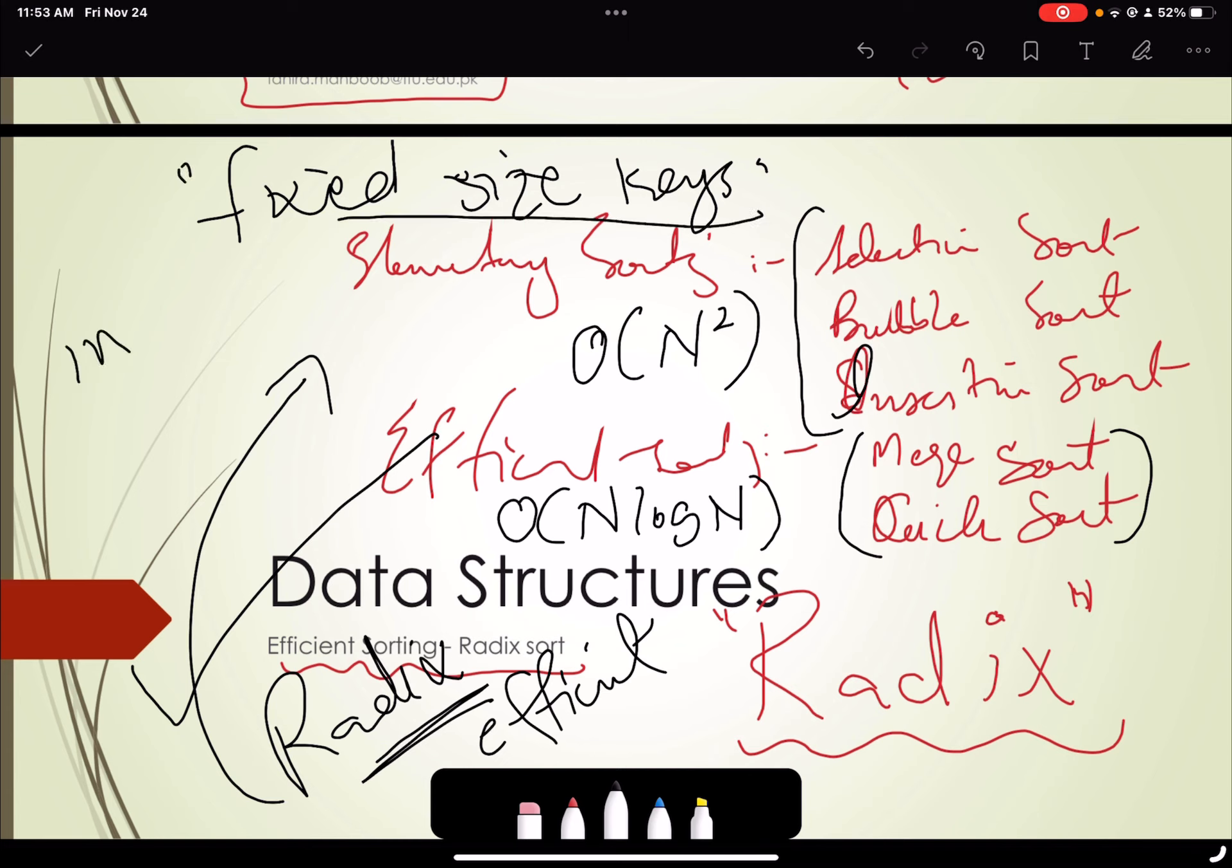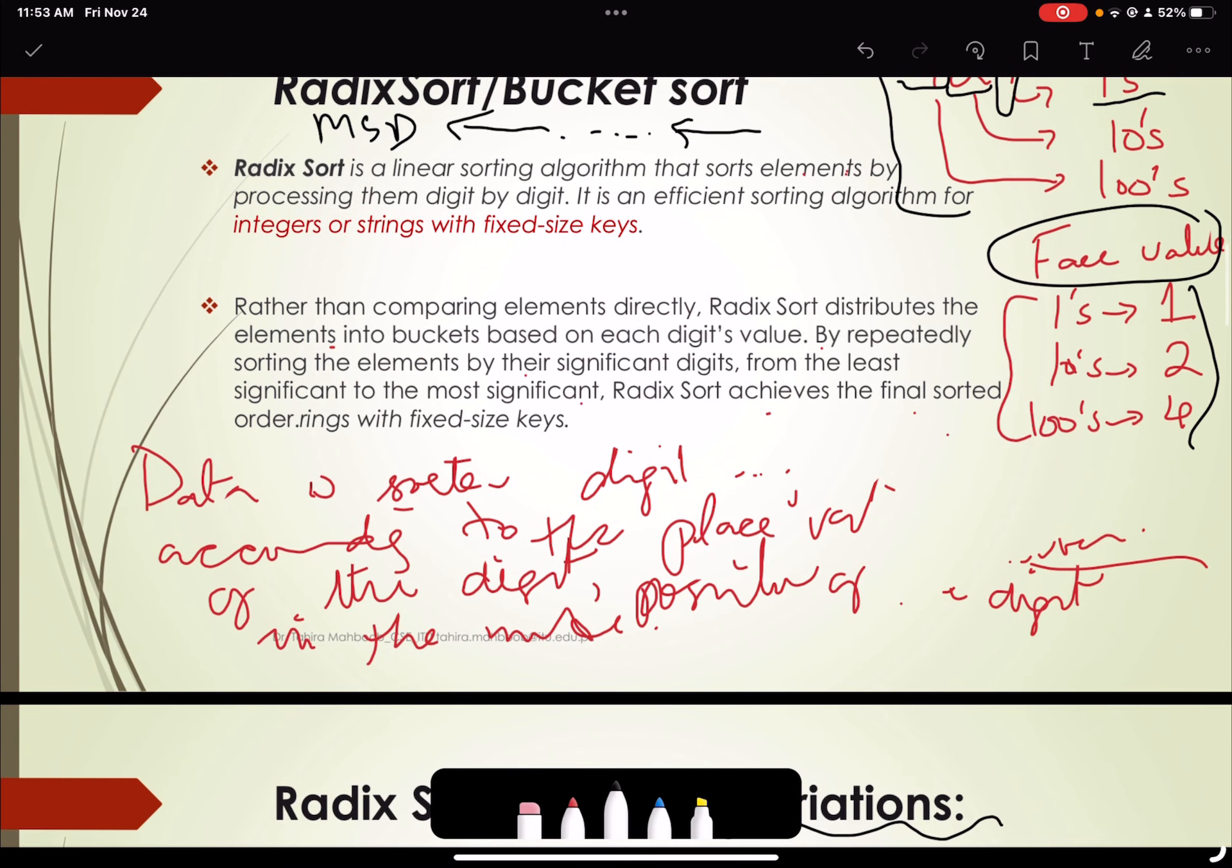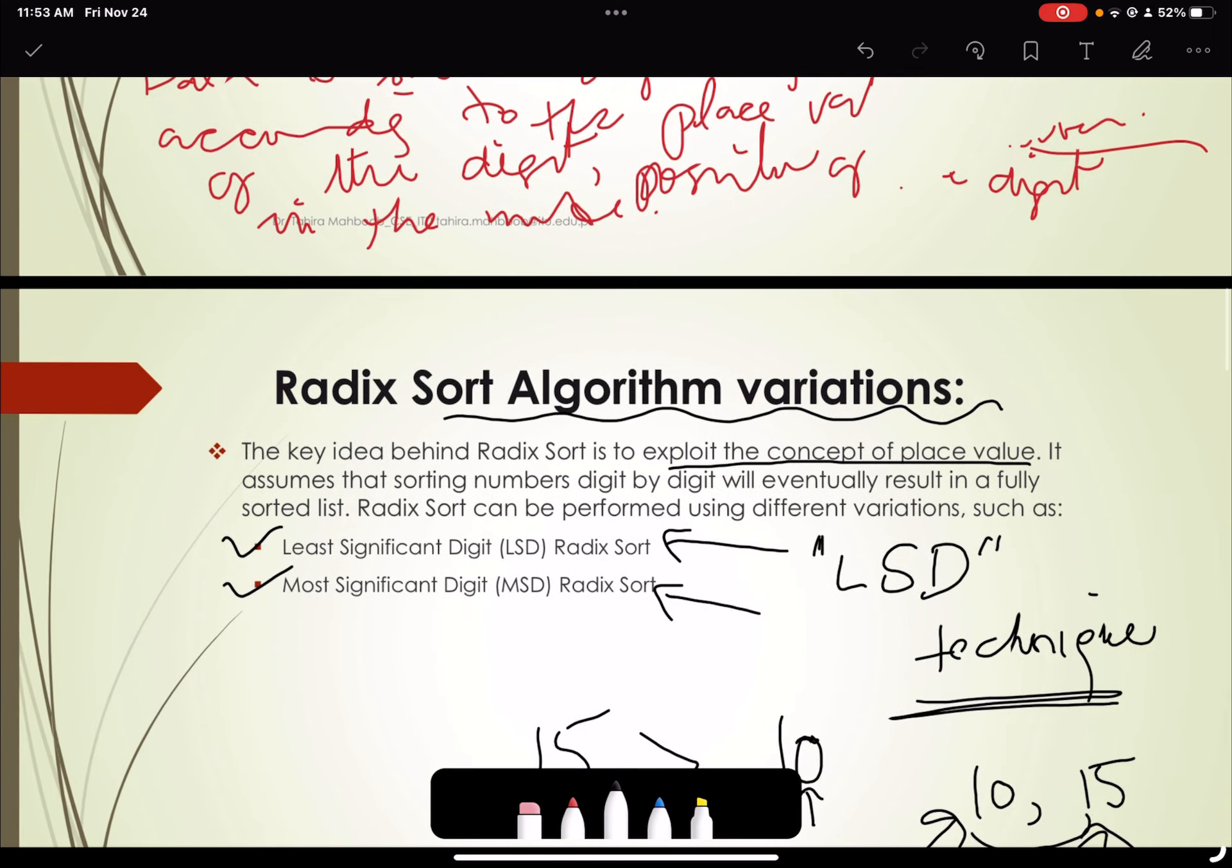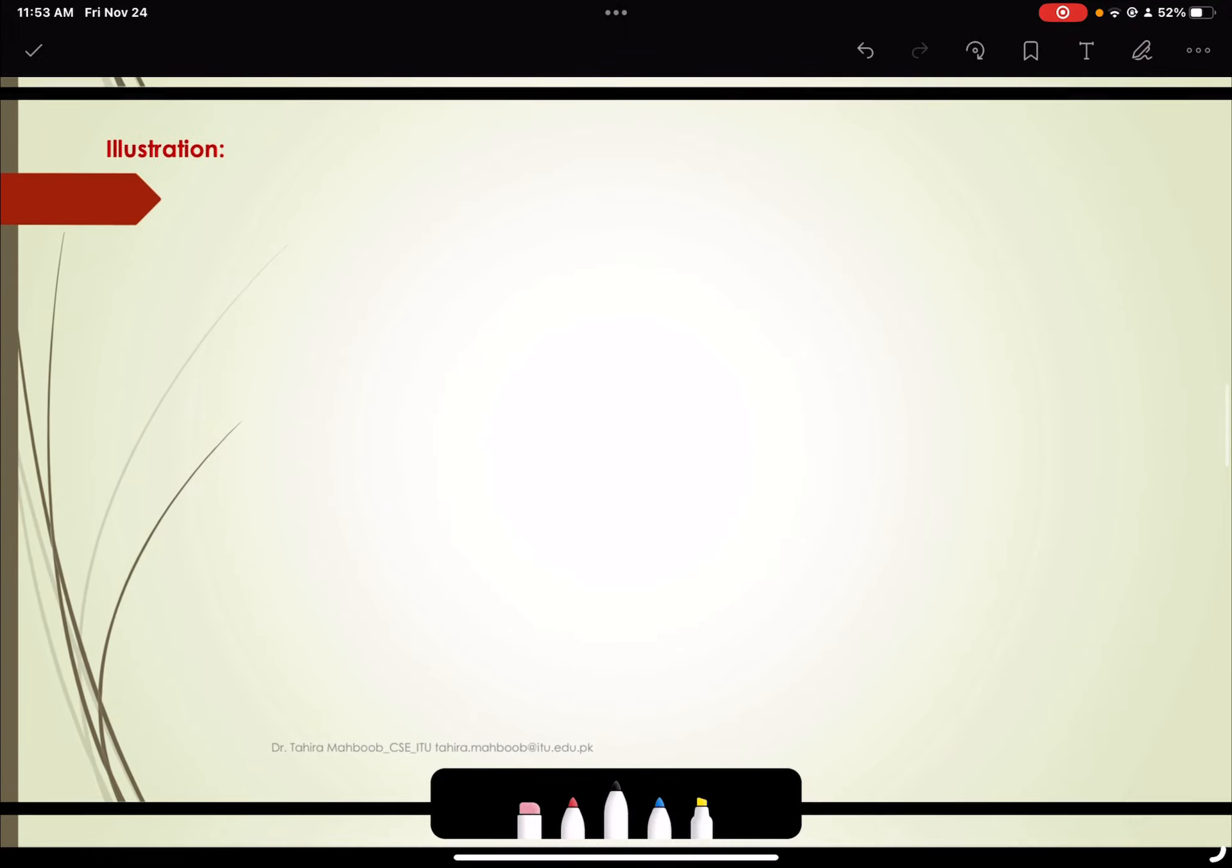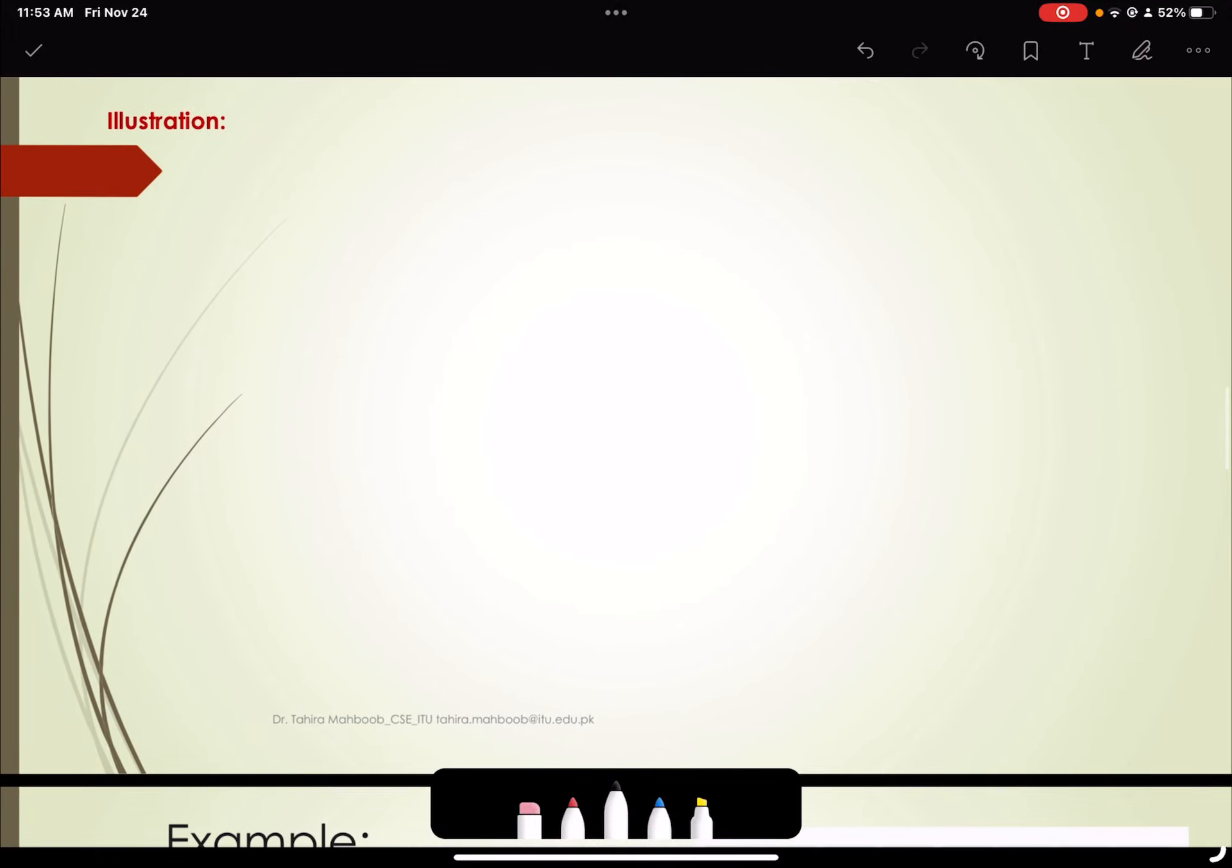In case of integers or strings. And I have told you that we implement them using buckets. So we are going to focus on this concept of the buckets. So what are the buckets and how do we use the concept of buckets to implement the Radix sort?